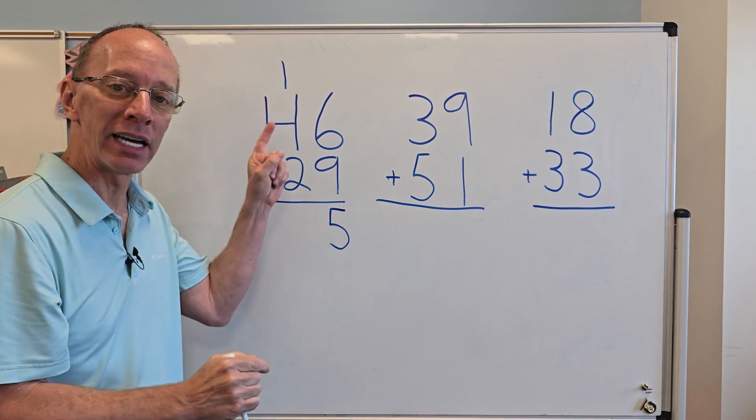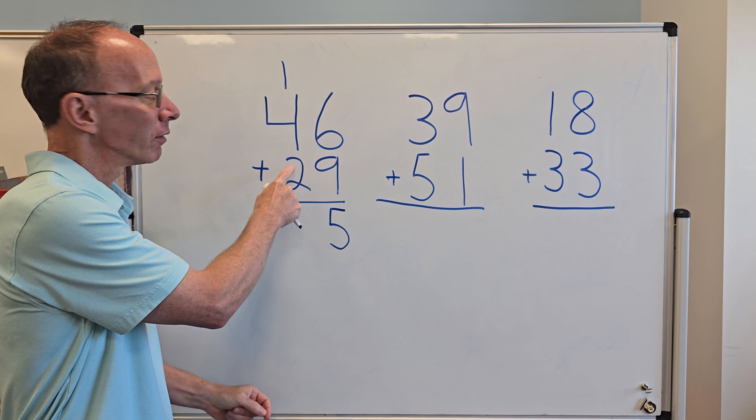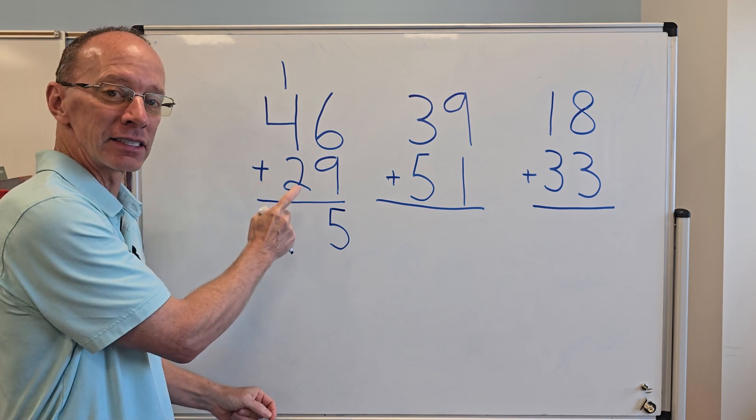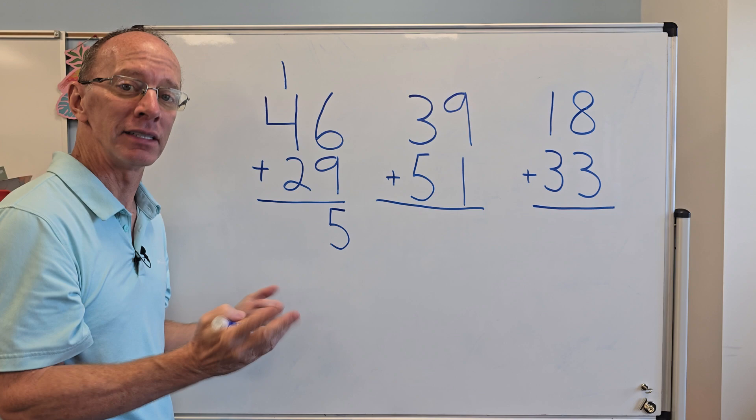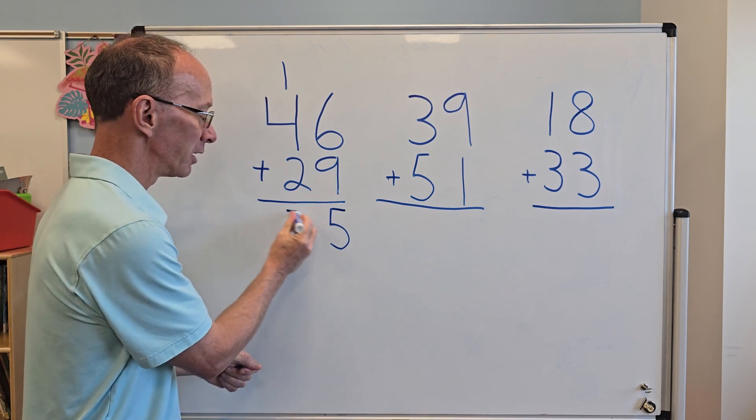All right, so now I'm going to go ahead and add the tens. So I go four plus two is six. Don't forget about that one up there. That would be seven. Seven sent from heaven.